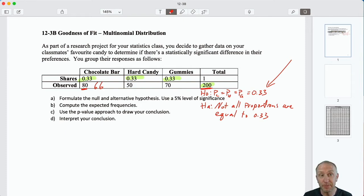Now, because these proportions in the null hypothesis are all the same, that observed value is going to be the same for all of them. I would expect a third of 200. I would expect 66 would prefer the hard candy. I would expect 66 would prefer the gummies. These values are consistent with a belief or an expectation that their preferences are all the same, and they're all equal to 0.33. So we have our expected frequency.